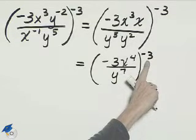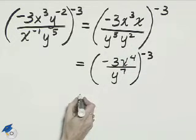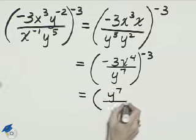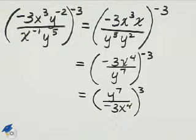To make that a positive exponent, all we need to do is take the reciprocal of the fraction inside the parentheses. So that will be y to the 7th over negative 3x to the 4th. And that's all raised to the positive 3rd power now.